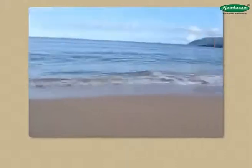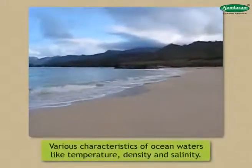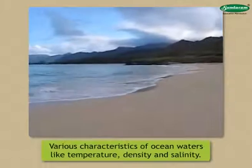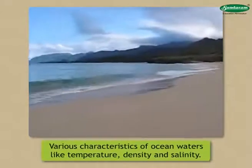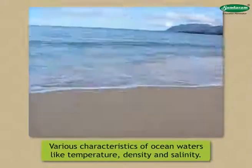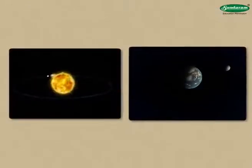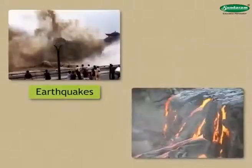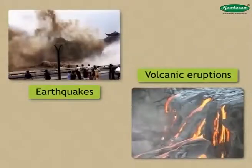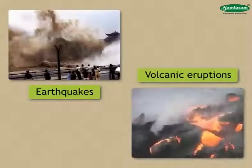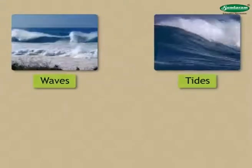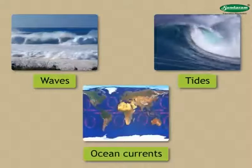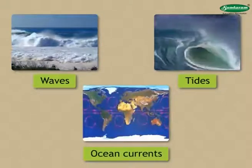Ocean waters are dynamic in nature. The movements of ocean water are caused by various characteristics of ocean waters like temperature, density and salinity, gravitational attraction of the sun and the moon, the rotation of the earth, and earthquakes and volcanic eruptions occurring at the ocean floor. Waves, tides and ocean currents are the three main forms of ocean water movement.